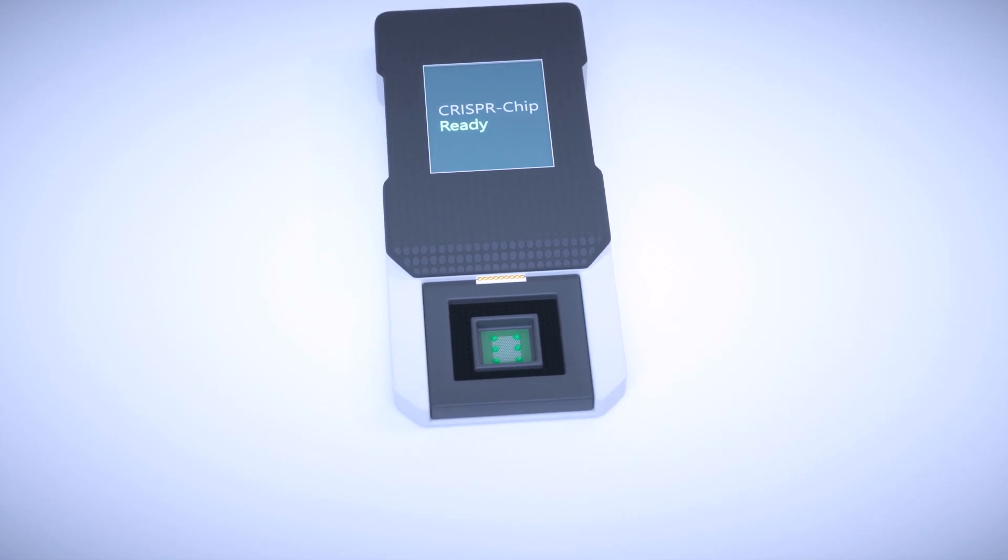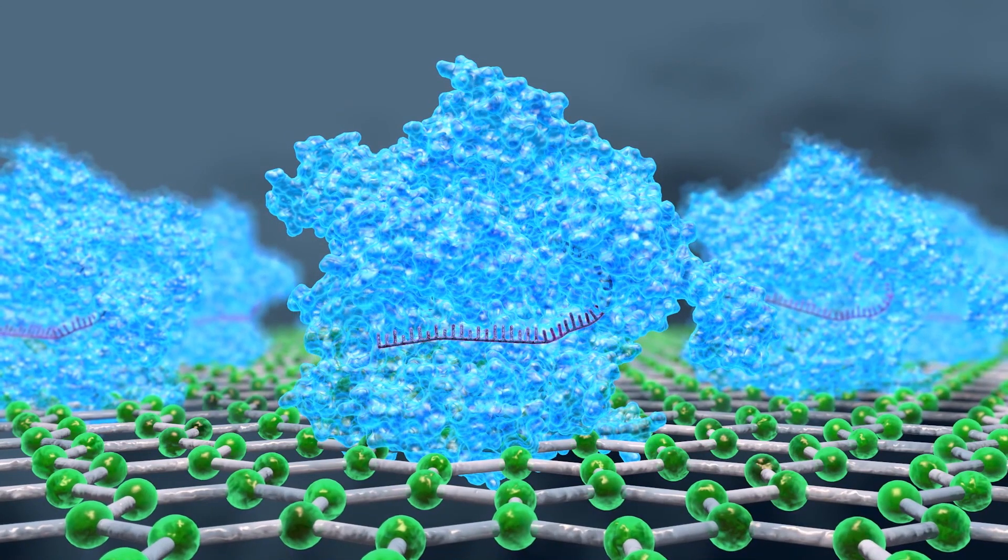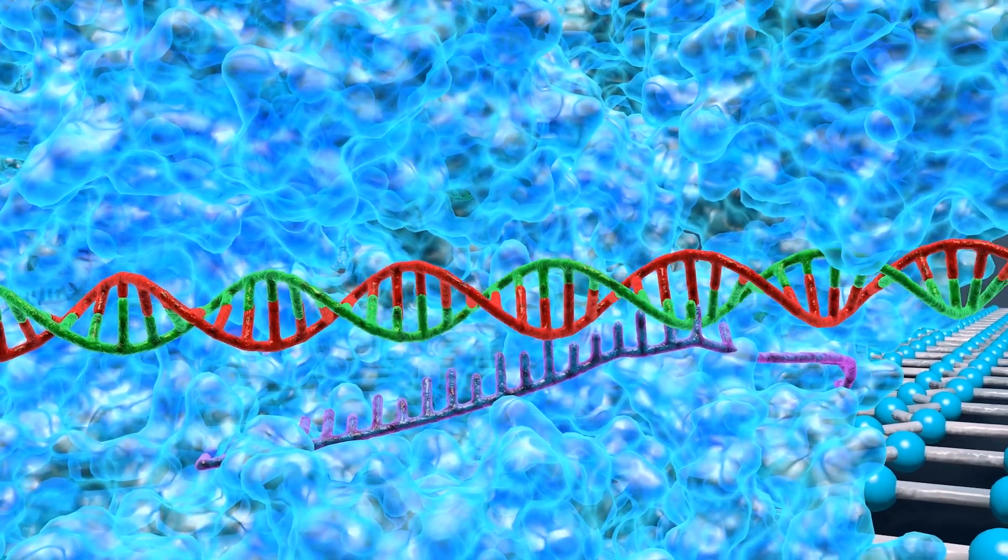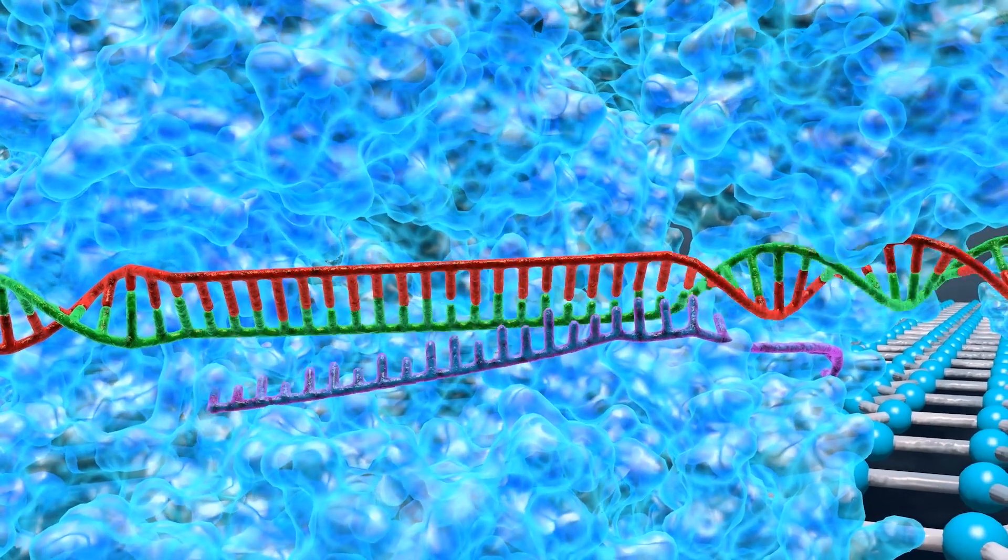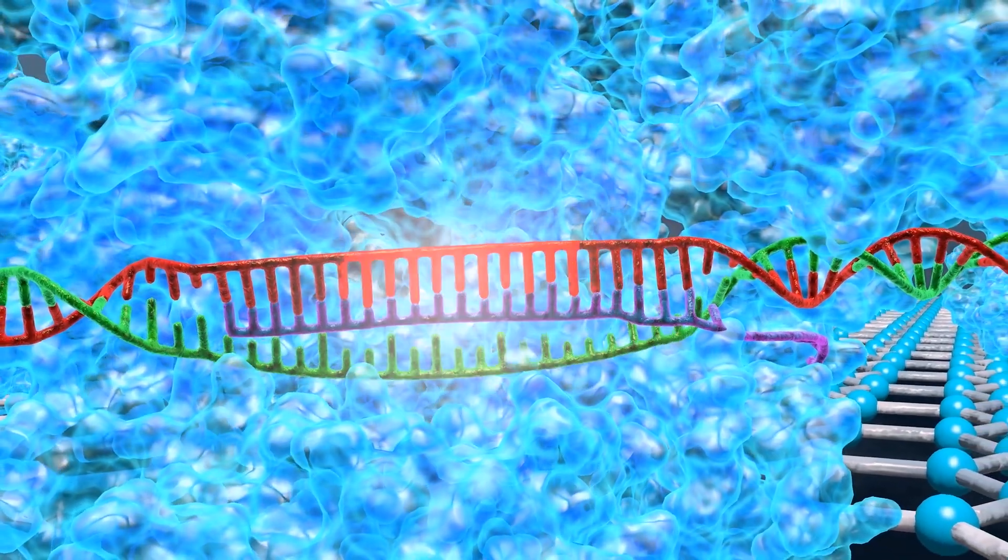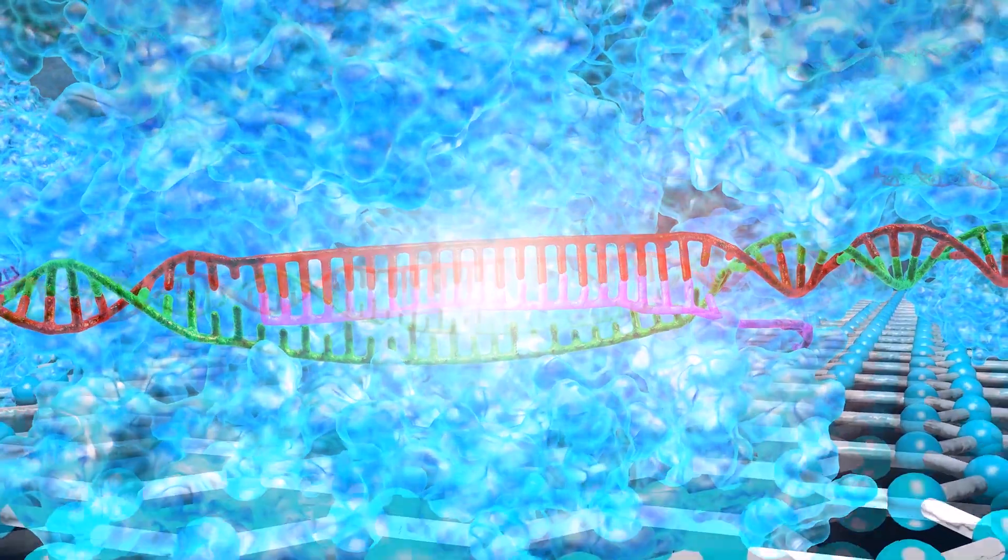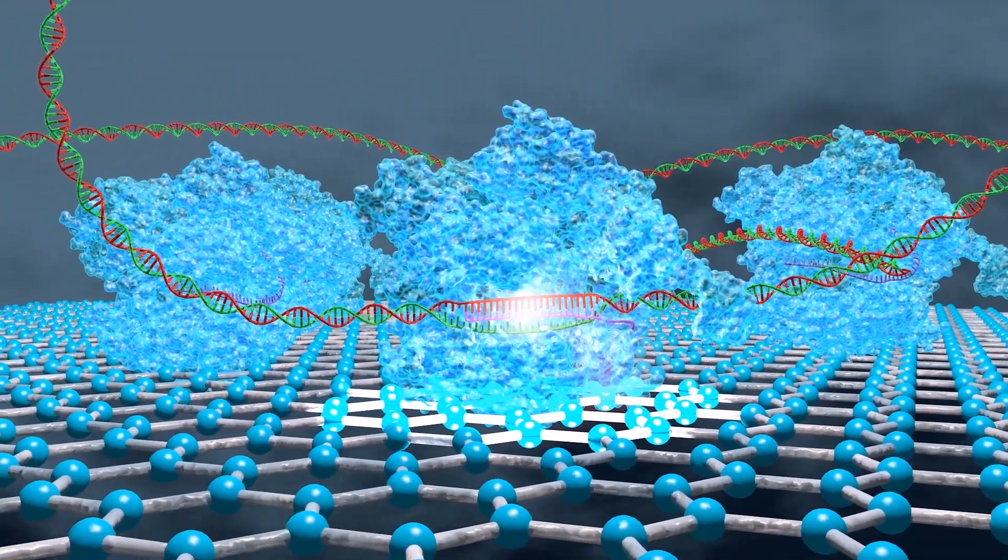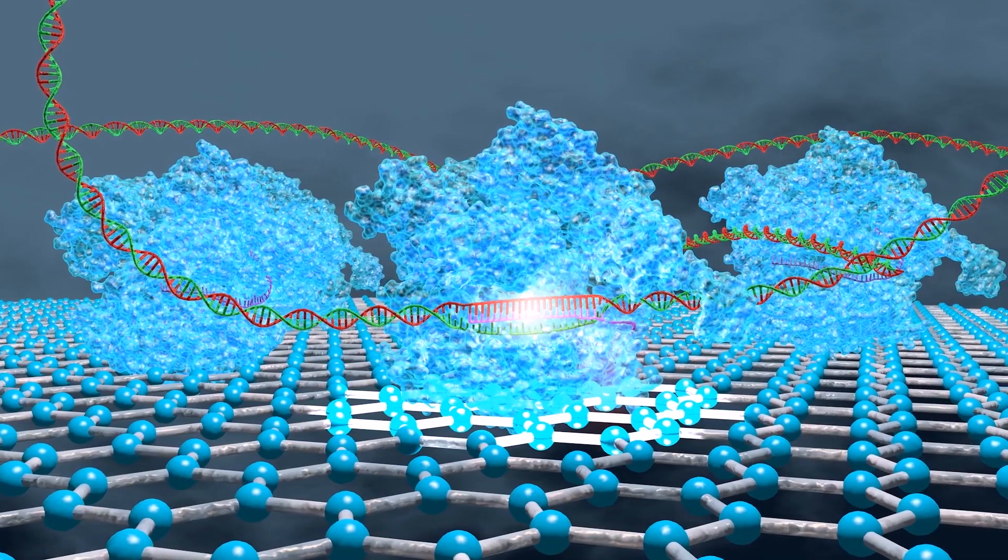CRISPR chip is a handheld device that combines thousands of CRISPR molecules with a graphene transistor. Researchers design CRISPR to scan through DNA and find specific genes or mutations, while the transistor is super sensitive to electrically charged materials, like our DNA.